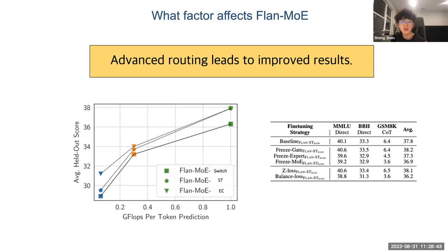Another factor is the routing decisions. We tried different routing strategies. Expert choice is used during encoding, while we still use top-K during decoding to prevent information leaking. Advanced routing like stable ST-MoE and expert choice give consistent performance gains. ST-MoE uses ZLoss as the balancing loss, while expert choice lets the expert select which tokens to route and prevents token dropping. For fine-tuning, it's better to use the same balancing loss and configuration as in training. Freezing gates may give some benefits but is similar to doing nothing.